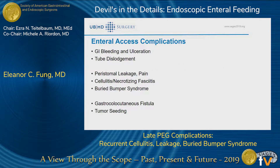You heard first about the early complications. Some of the complications from PEG tube or enteral access include GI bleeding and tube dislodgement, peristomal leakage, cellulitis, necrotizing fasciitis, buried bumper syndrome, and gastrocholocutaneous fistulas and tumor seeding. The three I'm going to focus on today are the three in the middle.